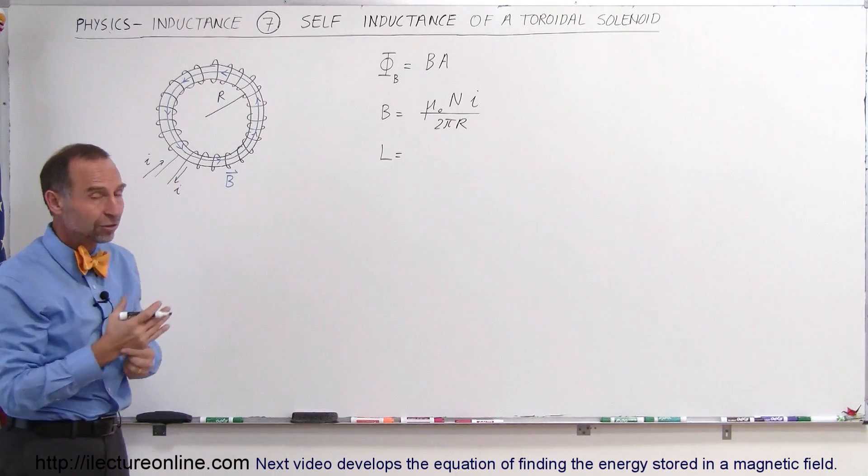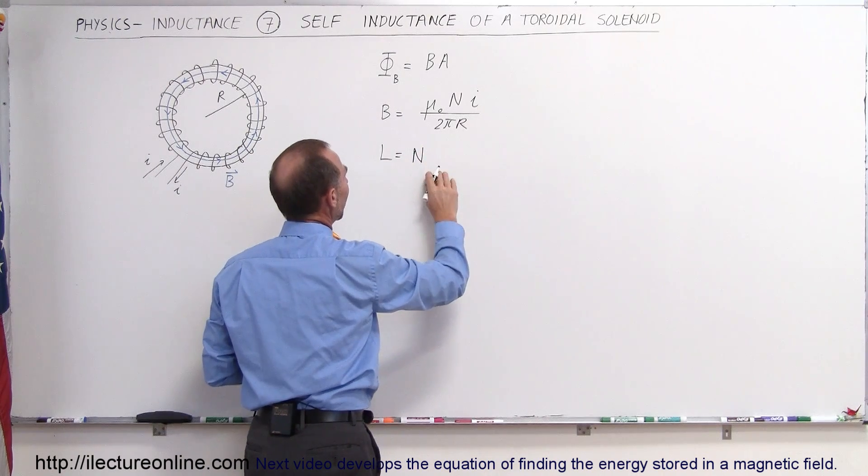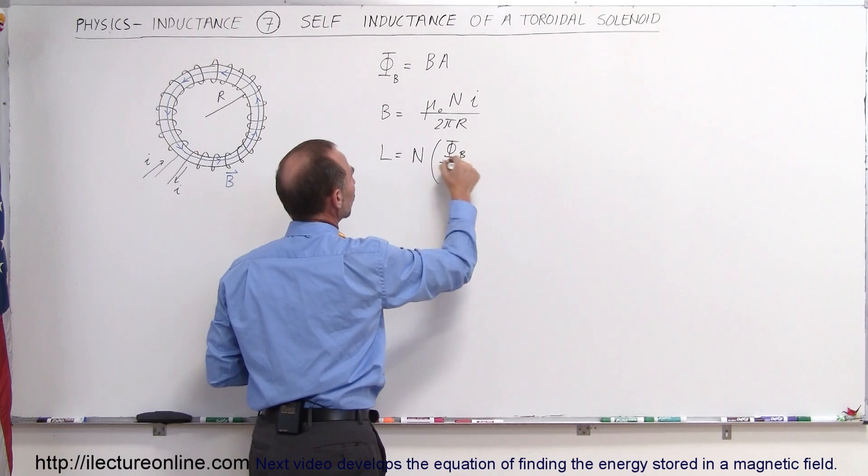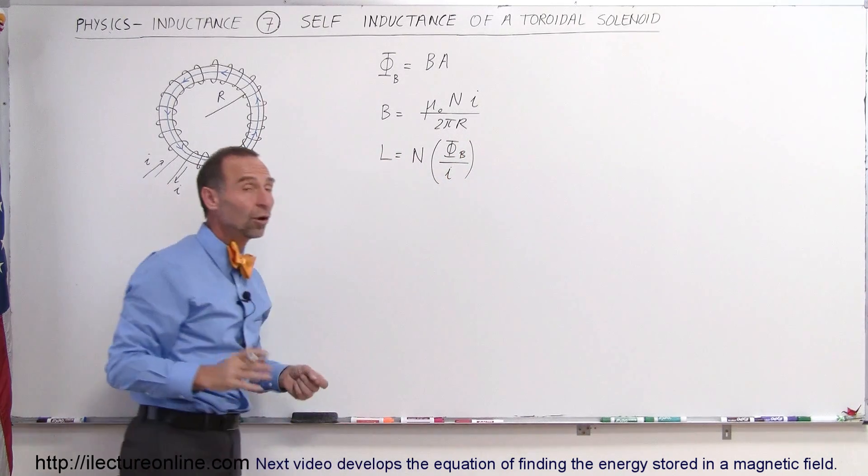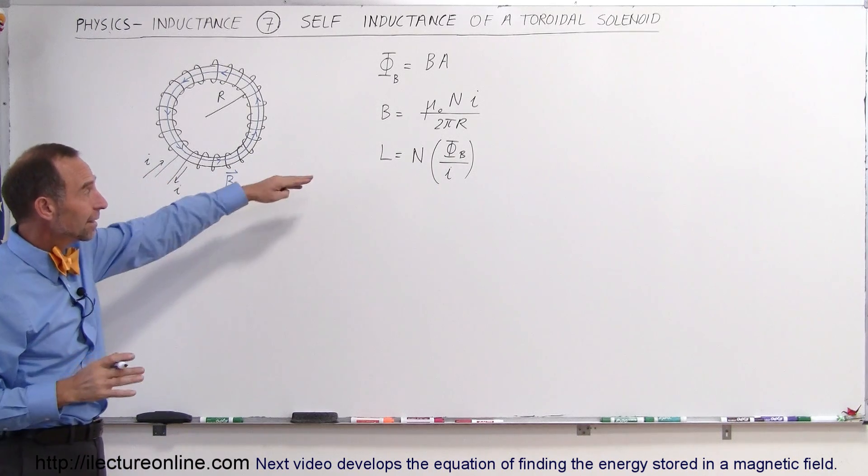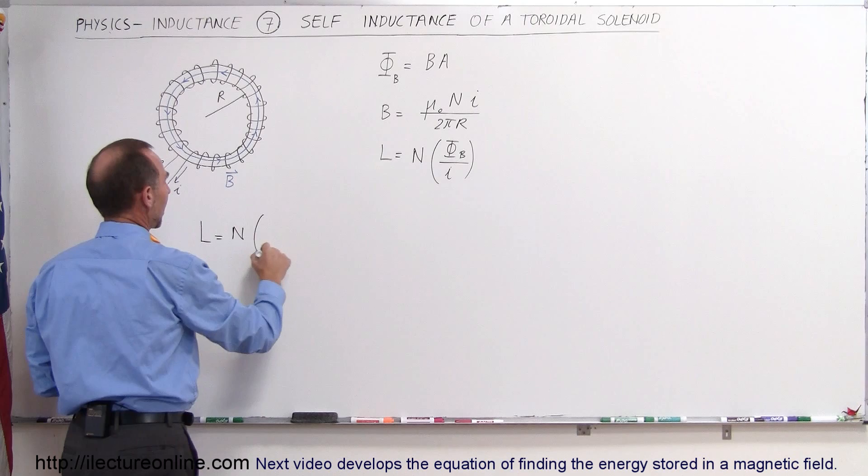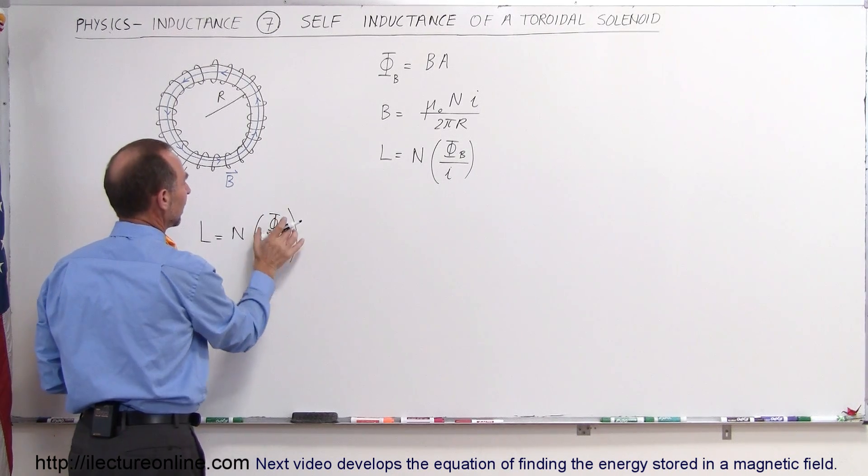And finally the self-inductance by definition is equal to the number of loops times the ratio of the flux, magnetic flux through the loops, divided by the current that drives that flux. So if we now take the definition L, self-inductance, it's equal to number of turns times the magnetic flux through the solenoid divided by the current to the solenoid.